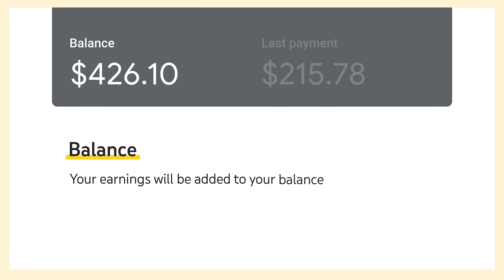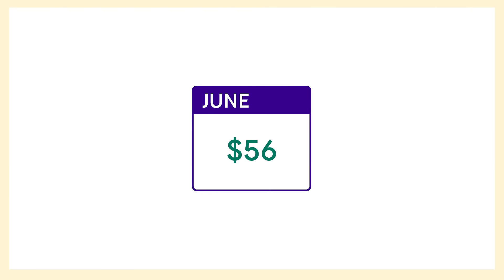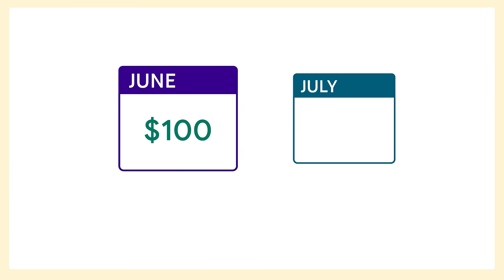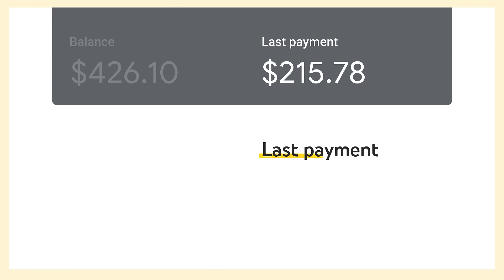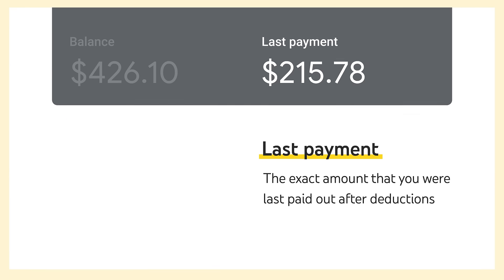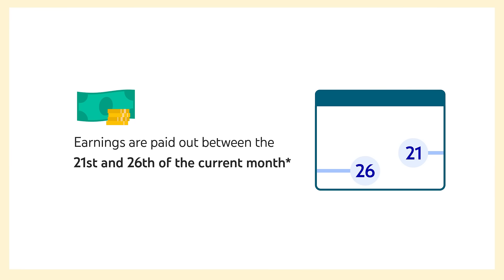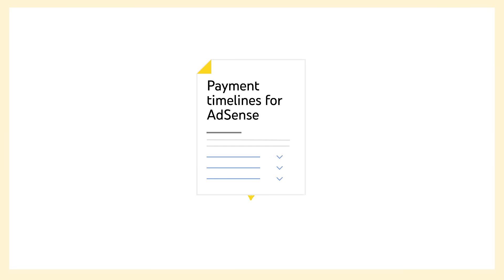Your earnings will be added to your balance between the 7th and 12th of the following month. For example, if you're in the United States and you earn $100 in June, you'll see this balance in AdSense between July 7th and 12th. Last payment shows the exact amount that you were last paid out after deductions. Earnings are paid out between the 21st and 26th of the current month, as long as your total balance has reached the payment threshold and you have no payment holds. Note that once you're paid out, your balance will reset. For more info about how you'll get paid, check out the Help Center article linked in the description.